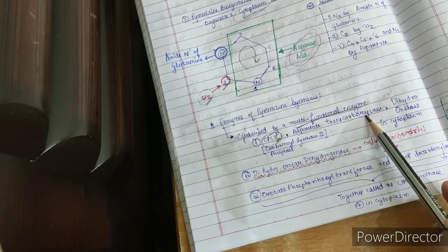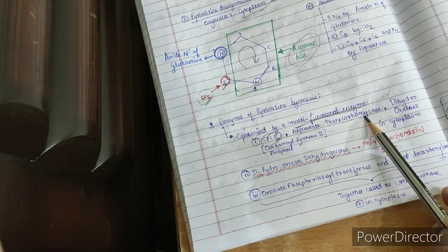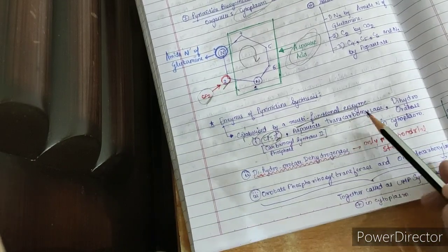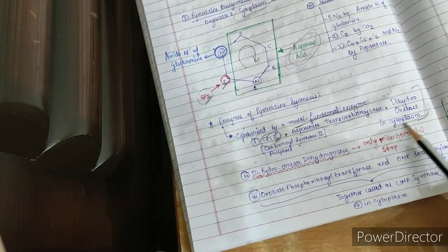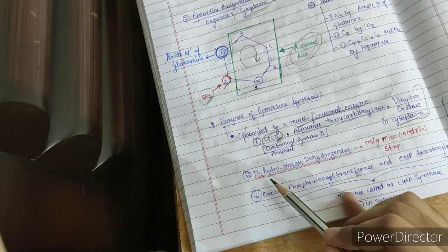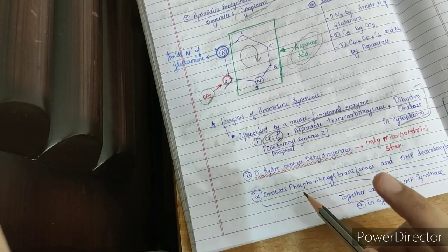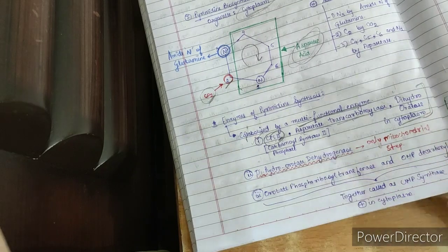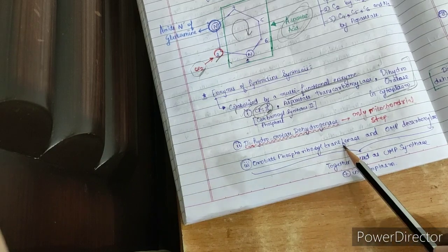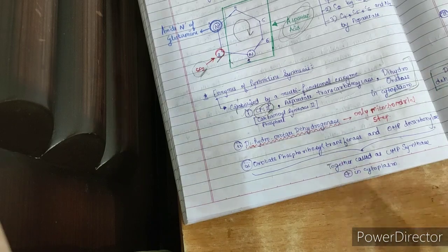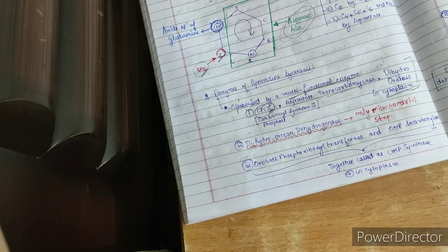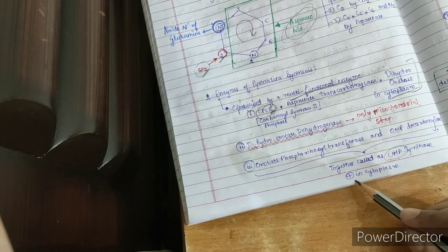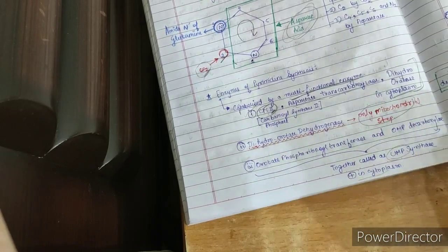Another enzyme is aspartate transcarbamylase — corresponding to ornithine transcarbamylase in the urea cycle. Together, CPS2, aspartate transcarbamylase, and dihydroorotase catalyze the first few steps in the cytoplasm. The only mitochondrial step is catalyzed by dihydroorotate dehydrogenase. Finally, orotate phosphoribosyl transferase and OMP decarboxylase together are called UMP synthase, because the final product is UMP (uridine monophosphate), and these are present in the cytoplasm.